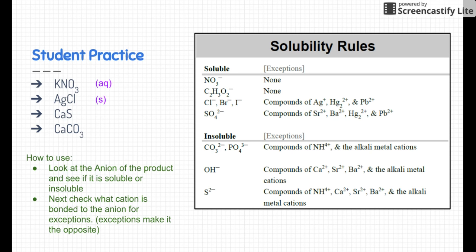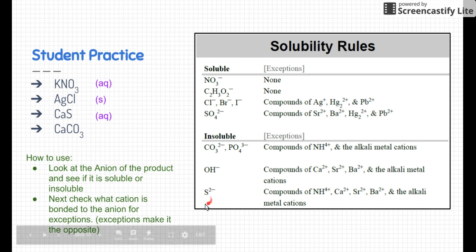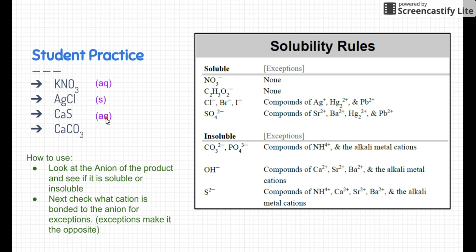I would recommend pausing the video right now and seeing if you can figure out the last two on your own. Did you pause it? Did you try it? I hope you did. If so, let's check your work. Well, calcium sulfate is aqueous. To know why, well first look at sulfate. Sulfate is our anion, so I look down here—sulfate is insoluble, so we should write an s. But let's go look at the exceptions really quick. Oh hey, I see calcium. Calcium, if it's connected to sulfur, is an exception, so it flips it and it becomes soluble. So in this case, calcium sulfide—even though sulfide should technically be insoluble—the calcium makes it aqueous.